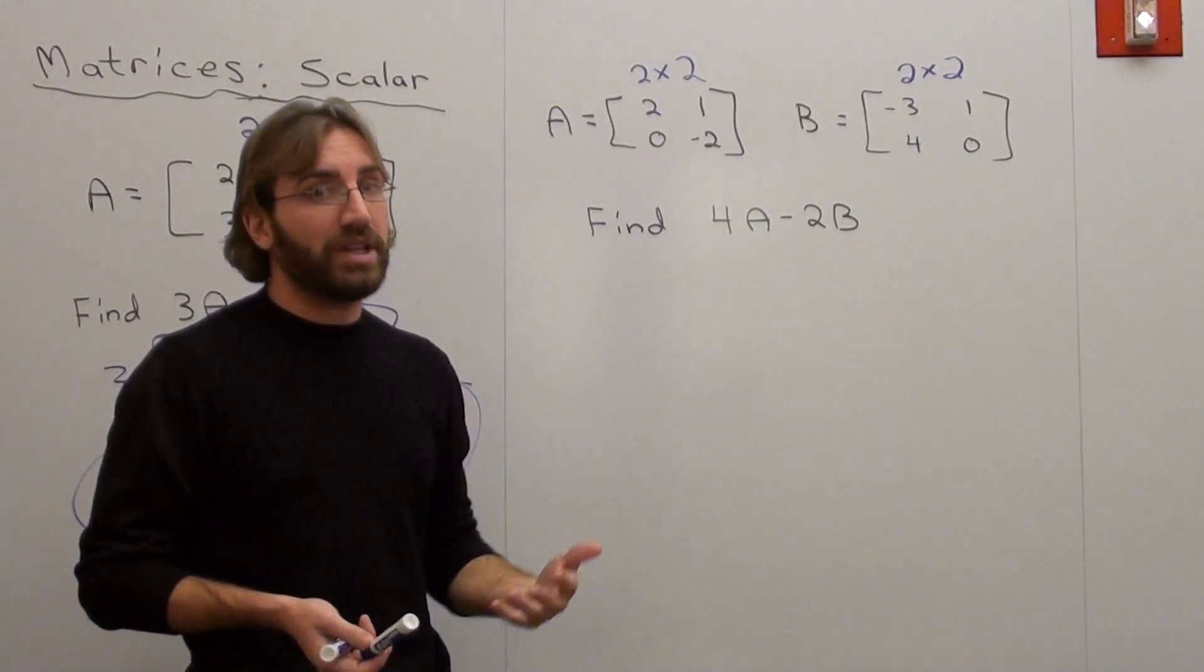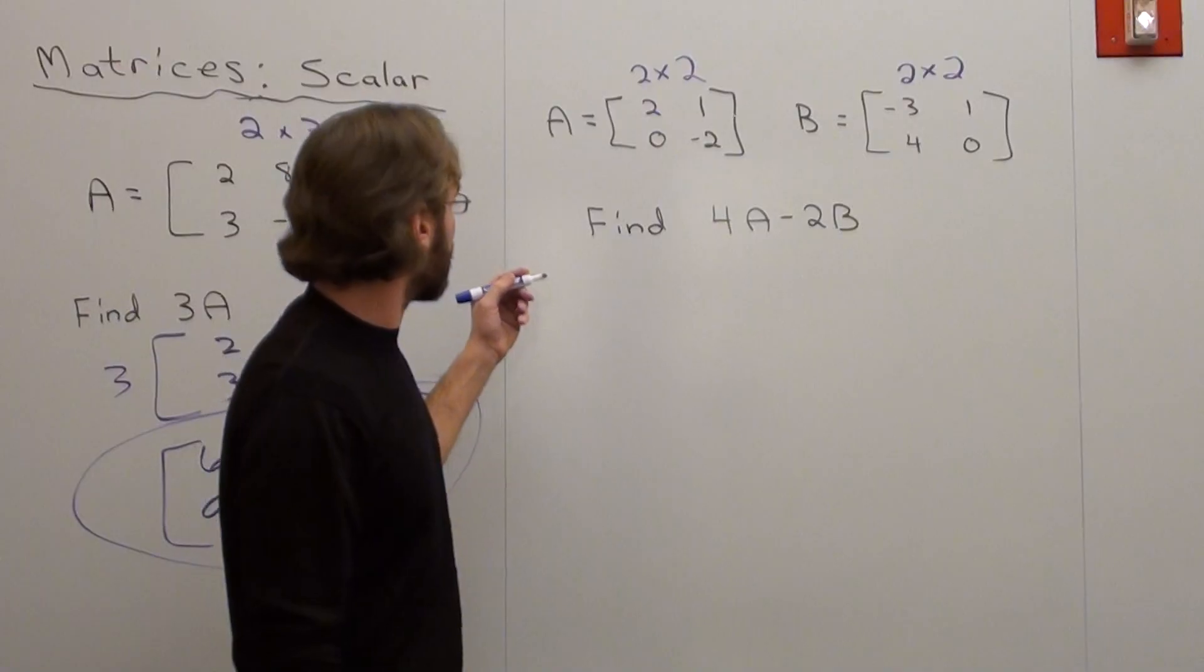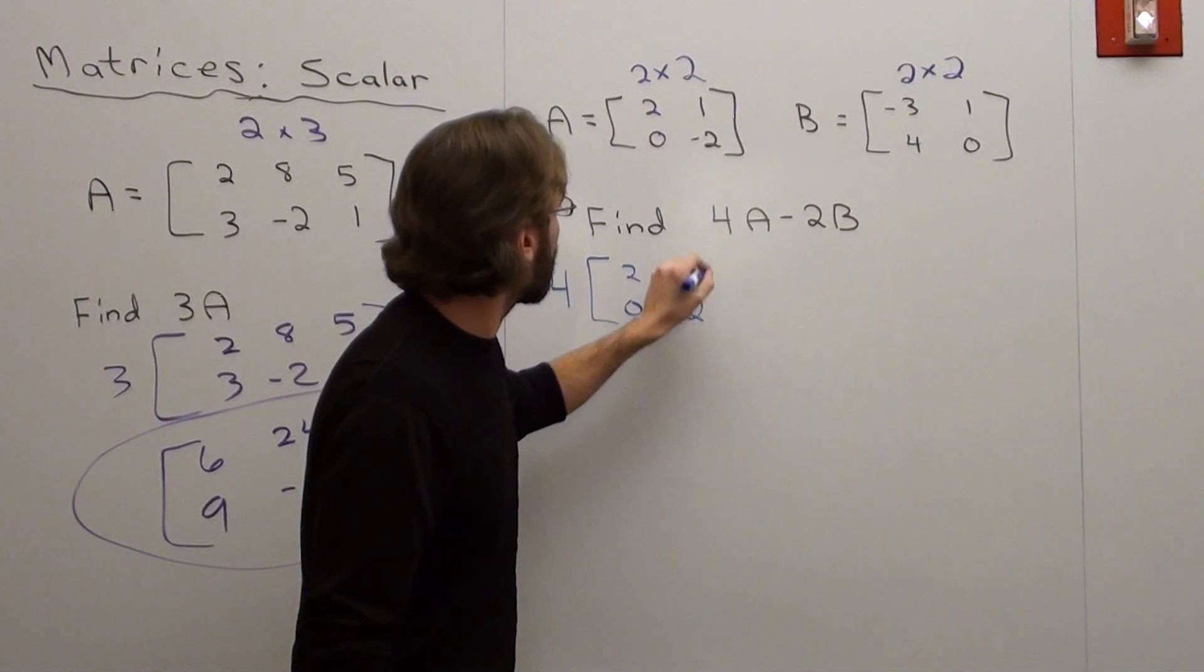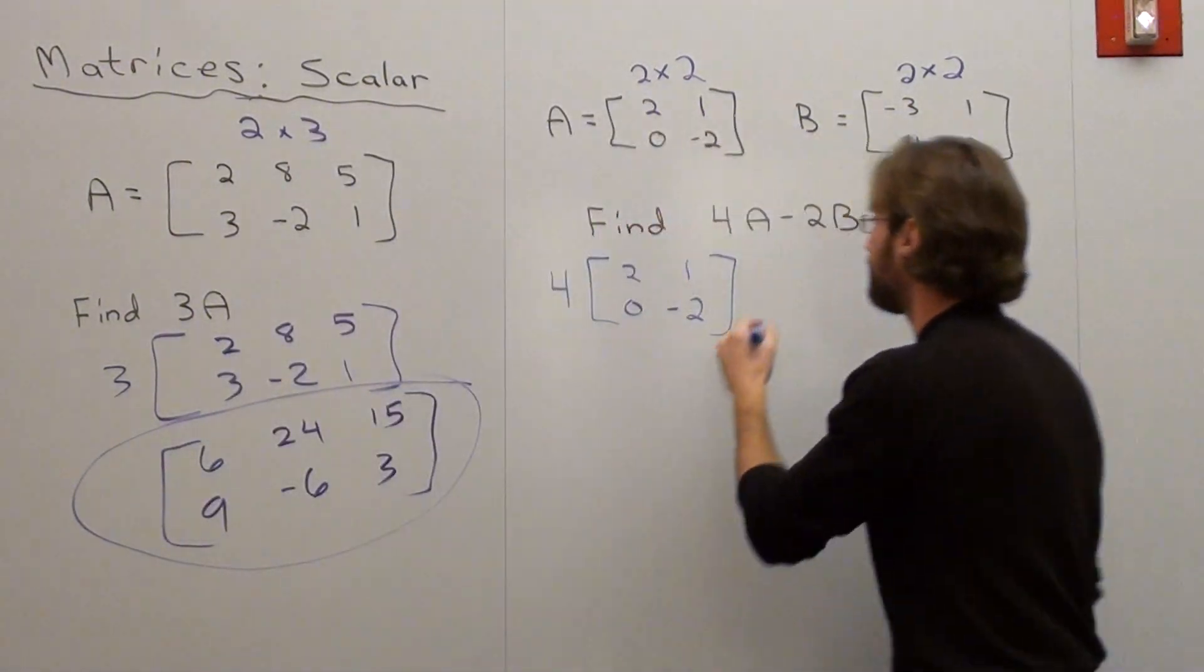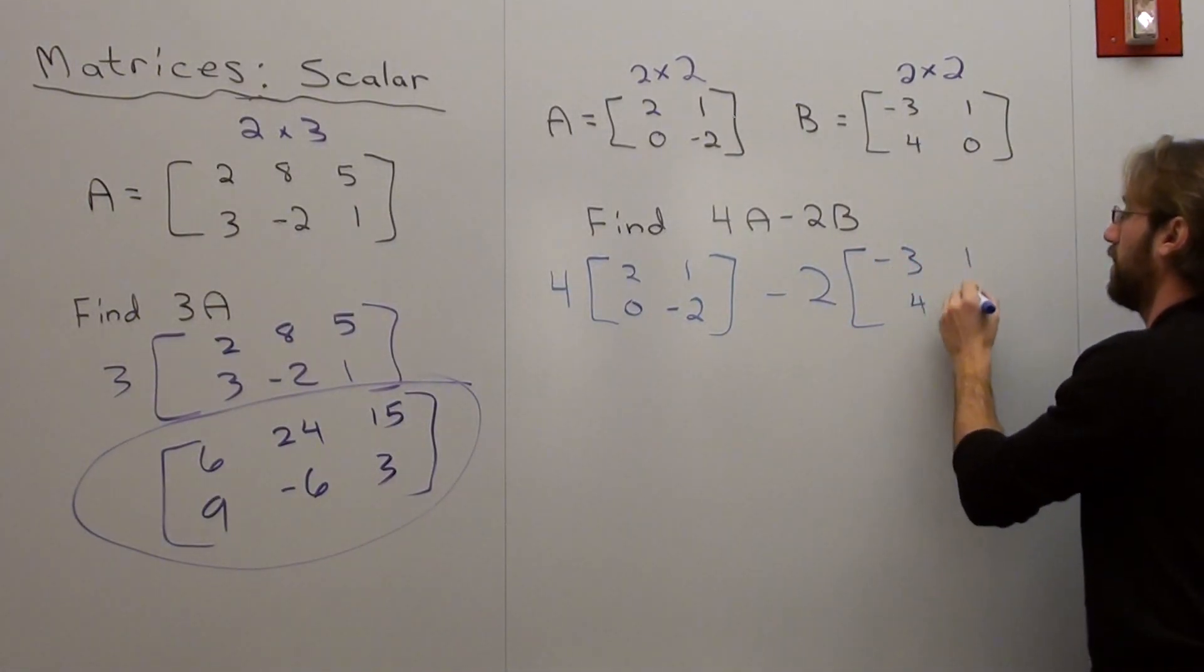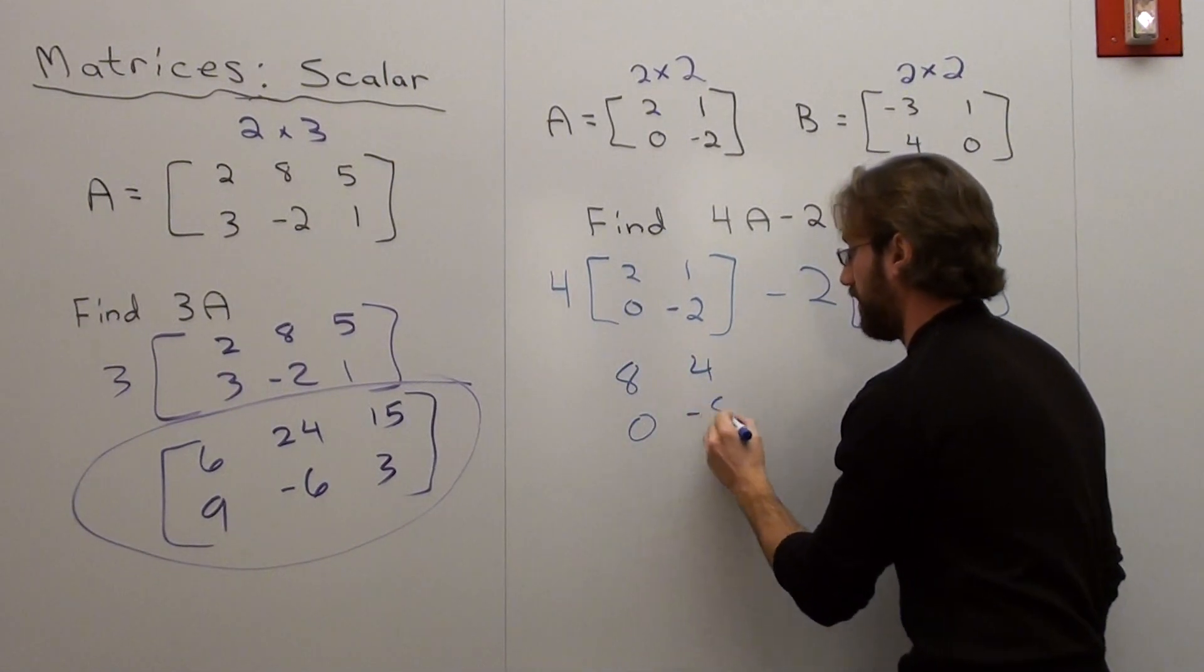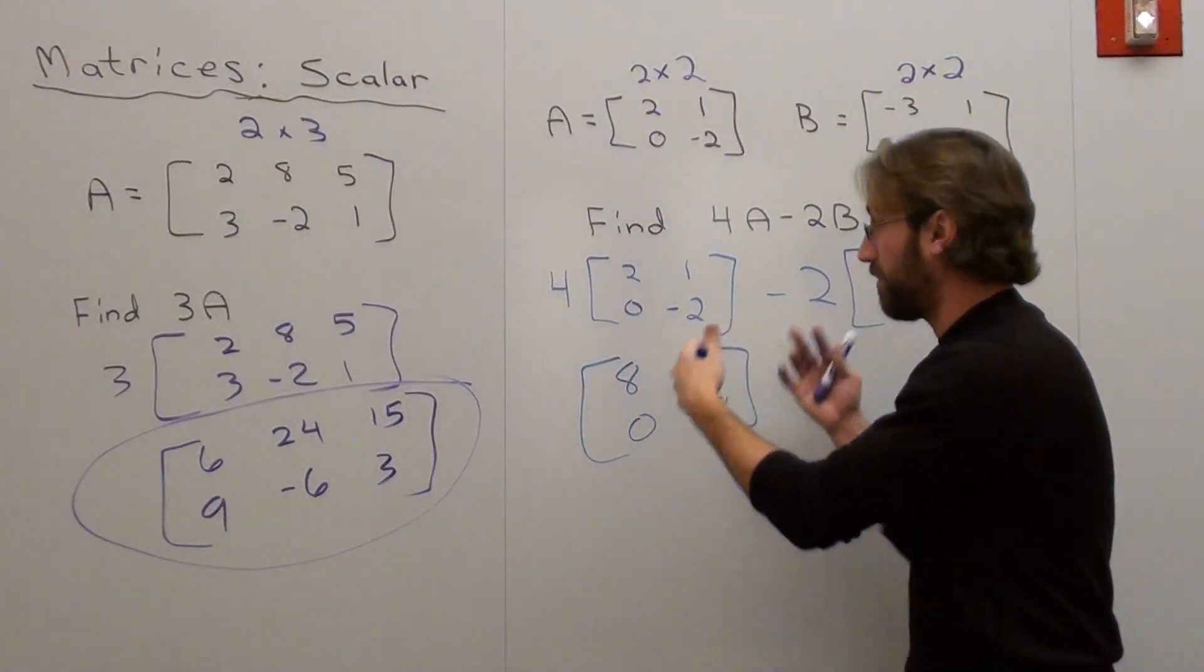So I'll go ahead and write this intermediate step. I probably usually wouldn't, but it doesn't hurt right now. So it's 4 times this, the first matrix, 2, 1, 0, negative 2, subtracted by 2 times the matrix. And here we go. 8, 0, 4, negative 8. That's what happens when I take the scalar 4 and multiply it by everything.